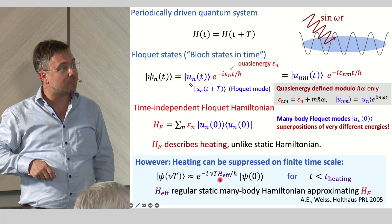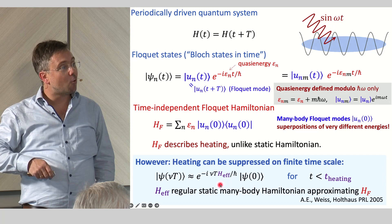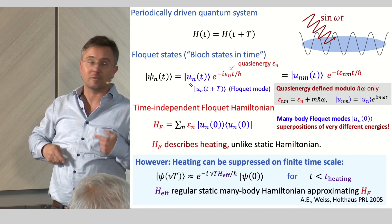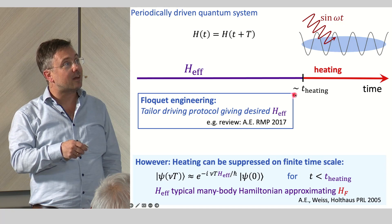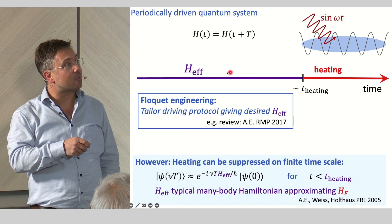These resonant processes might happen on a very long time scale. In this case, on shorter times, you might describe the evolution of the system with some effective Hamiltonian, which looks like a regular many-body Hamiltonian and not describing these heating processes. This works on some finite time before some heating time when these resonant processes, which spoil the physics described by this effective Hamiltonian, kick in.